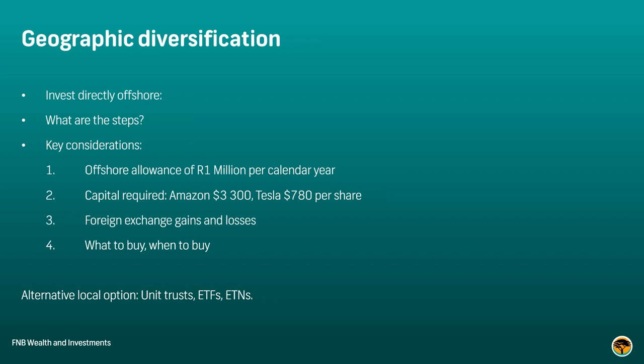Geographic diversification — we've now covered the importance of geographically diversifying our portfolio. But how do we do that as an investor? There are a few options. Firstly, there's investing directly offshore — taking physical rands offshore and investing directly in international stock markets. Some things to keep in mind: you have to comply with the offshore allowance of a million rand per year per investor, or obtain tax clearance to open up to 10 million. For most investors, the million rand threshold is typically the limit with regards to taking funds offshore.